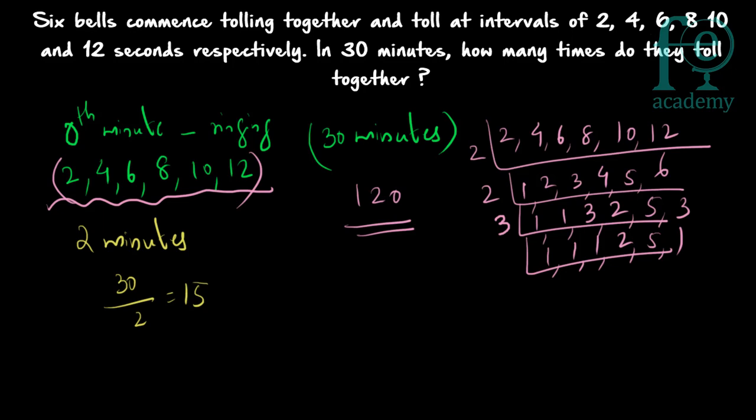So how many times will they be tolling together in 30 minutes? 15 plus 1 equals 16 times. It is given that they commence tolling together, so the 0th minute also counts. In the next 30 minutes they will be ringing together after every 2 minutes. In total: 30 divided by 2 equals 15, plus 1 equals 16 times — all 6 bells will ring together.